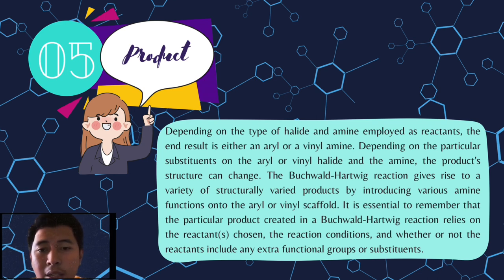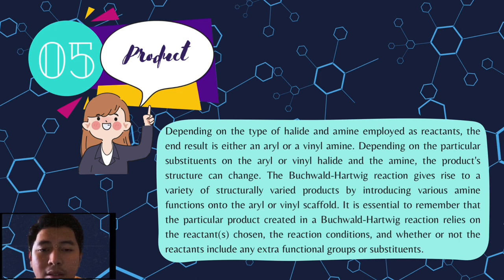Depending on the type of halide and amine employed as reactants, the end result is either an aryl or vinyl amine. Depending on the particular substituents on the aryl or vinyl halide and the amine, the product's structure can change. The Buchwald-Hartwig reaction gives rise to a variety of structurally varied products by introducing various amine functionalities onto the aryl or vinyl scaffold, depending on the reactants chosen, reaction conditions, and any extra functional groups or substituents.